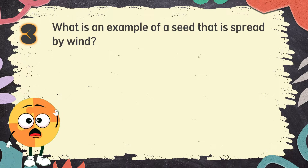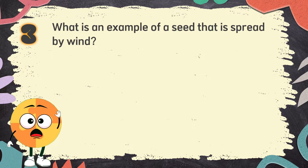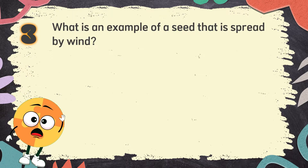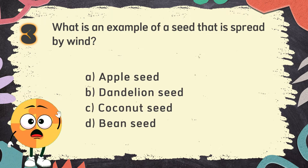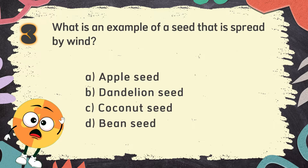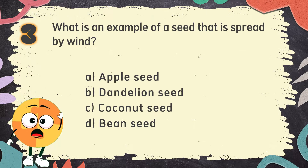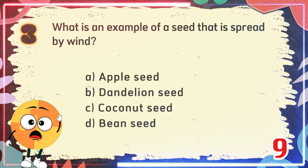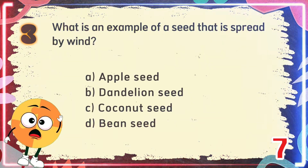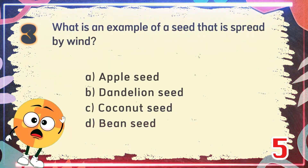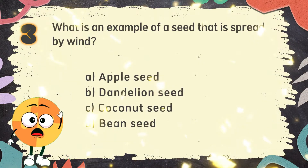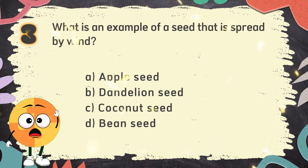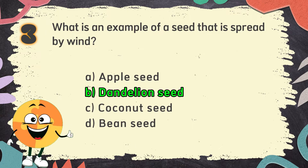Number 3: What is an example of a seed that is spread by wind? The choices are: A. Apple seed, B. Dandelion seed, C. Coconut seed, D. Bean seed. The correct answer is B. Dandelion seed.